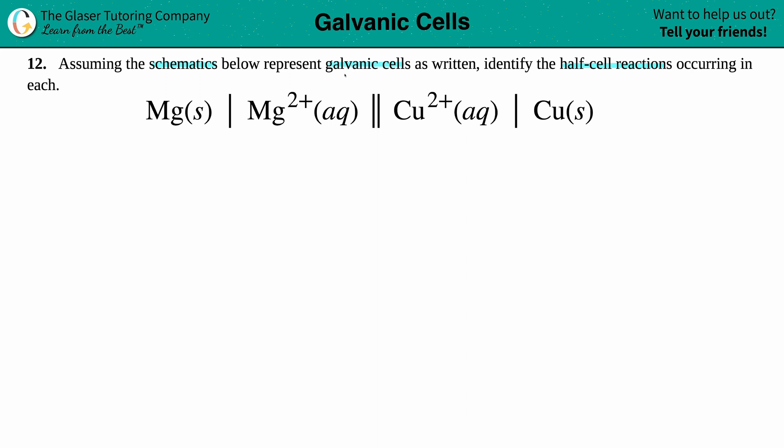First things first: these represent galvanic cells. Just as a side note, galvanic cells mean that we're undergoing something spontaneous, so no extra additional energy needed to make this schematic or this equation run.